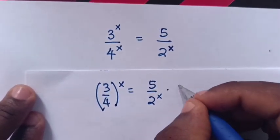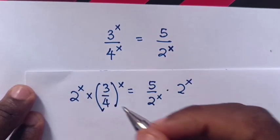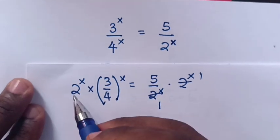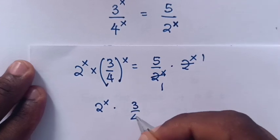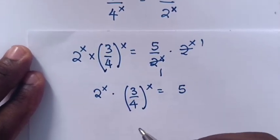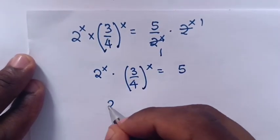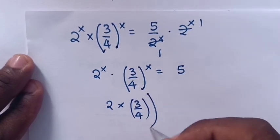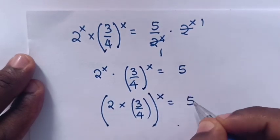Then we multiply by 2^x on both sides. So this and this will cancel. It will be 2^x times (3 over 4)^x is equal to 5. Now we can see common powers, so it will be (2 times 3 over 4)^x is equal to 5.